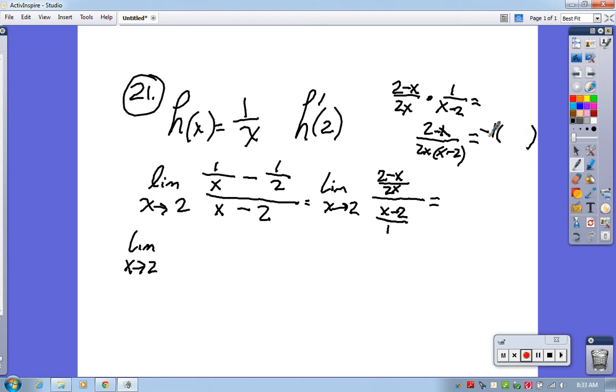this negative x becomes a positive x because it was divided by negative 1. This positive 2 becomes a negative 2. I change the order so it would look like this. Now, after I do that, this x - 2 divides out with that x - 2.